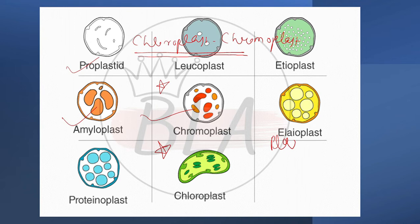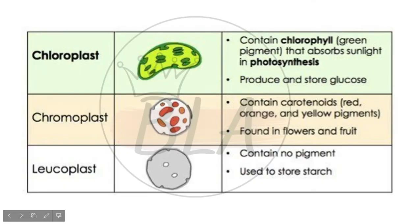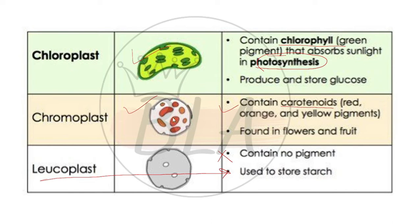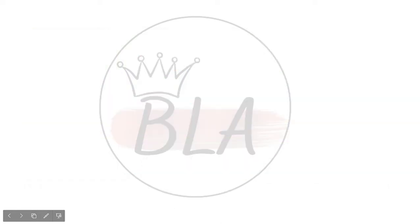So as you can see here, this diagram shows chloroplast, chromoplast and leucoplast. Here you can see that leucoplast has no pigments. Chloroplast contains chlorophyll, which is a green pigment, and it helps photosynthesis. Chromoplast contains carotenoids - red, orange and yellow pigments. So let's talk about major differences.